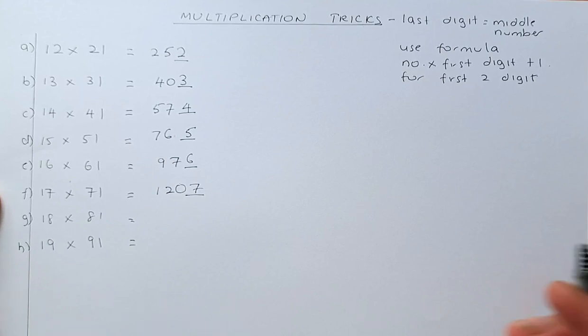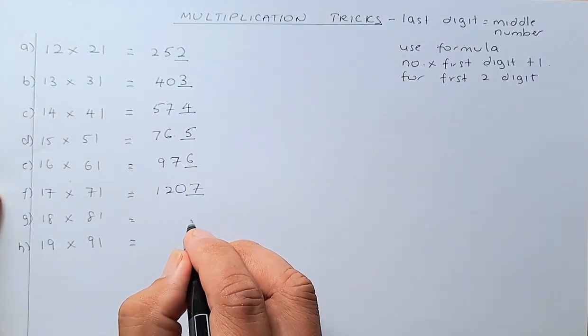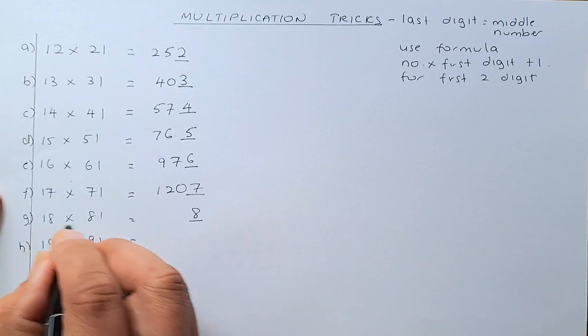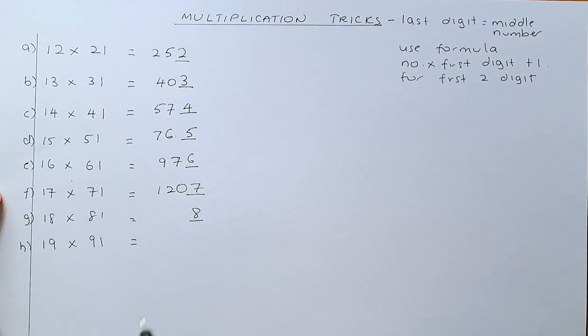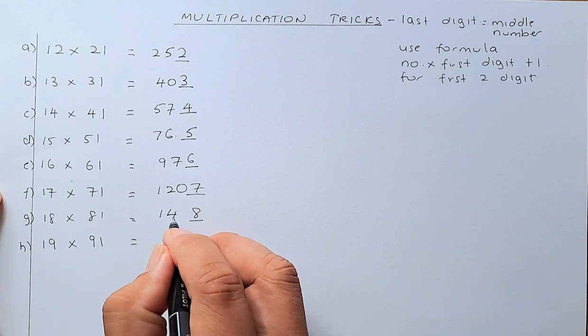And last but not least, there are 2 more. So, the last digit is 8 because the middle number is 8. 18 times 8 is going to be 144. 144 plus 1 is 145.